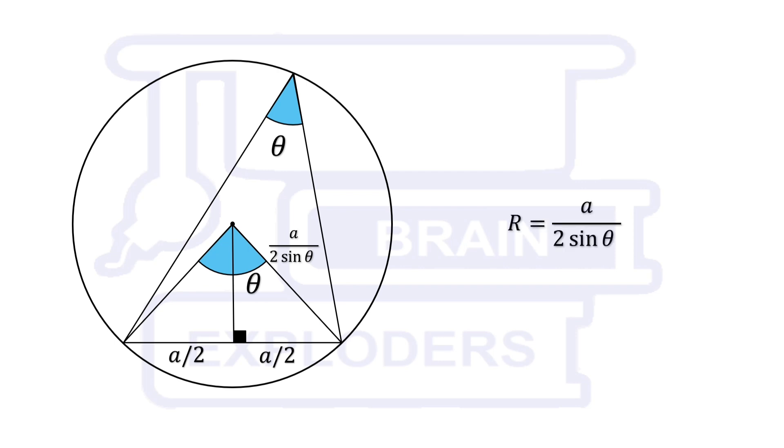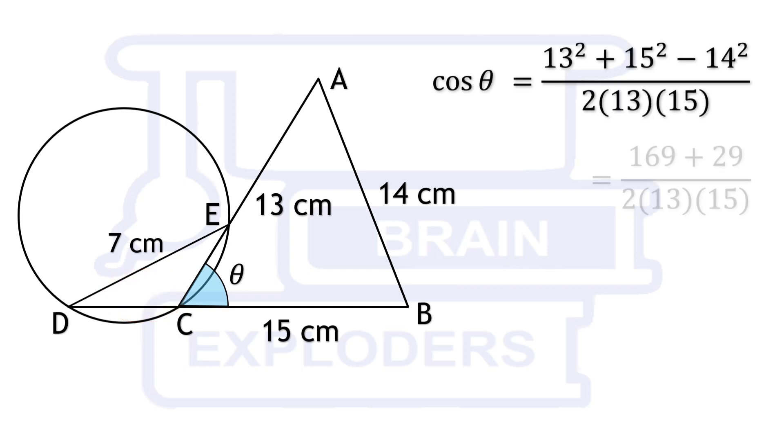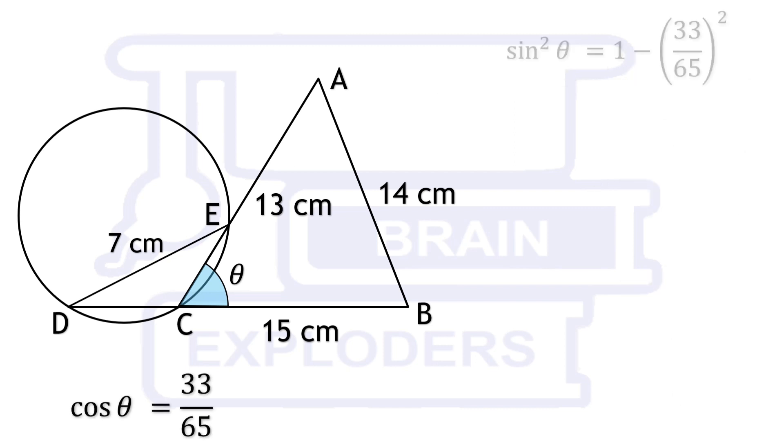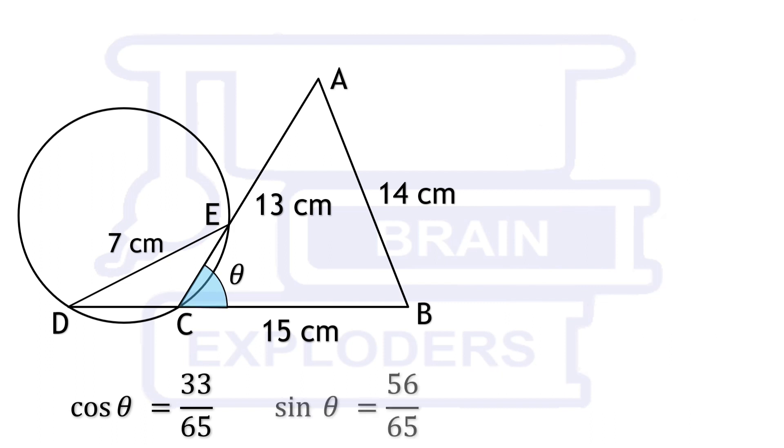Let's come to our problem. Radius of the circle can be calculated without using the length of DC. Suppose the angle opposite to the side AB is theta. We get cos theta equals to 33 over 65. We know that sin squared theta is equal to 1 minus cos squared theta. We get sin theta equals to 56 over 65.